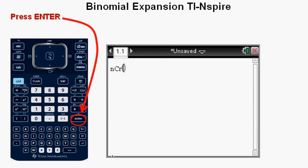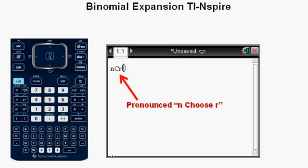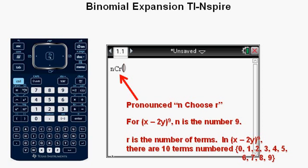Now we're going to talk about this notation for our combination. This NCR is verbally pronounced N choose R. N refers to the power that the binomial is raised to. For instance, in the expression quantity X minus 2Y to the power of 9, N would be the number 9. And R is the number of the term. For a binomial like the one above to the power of 9, there are 10 terms which we number 0 through 9.